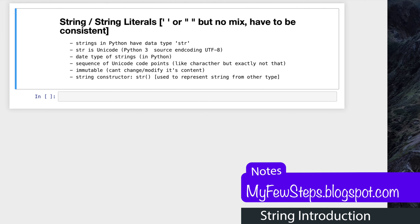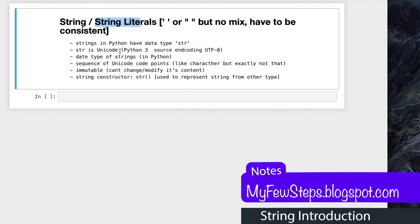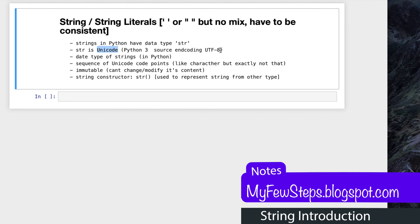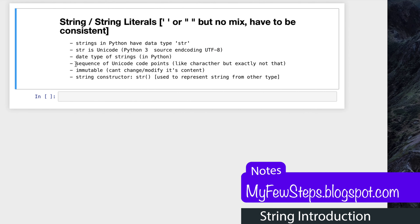In this video we will see about Python strings and string literals. Python strings are basically a data type and it is marked in Python as str. String is supported in unicode, and Python 3's source code encoding format is UTF-8. Strings are a sequence of unicode code points - these look like characters but basically are not real characters.